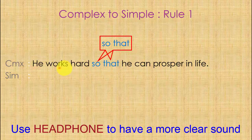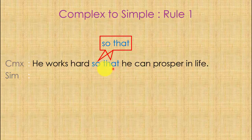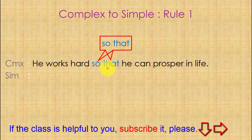A complex sentence contains at least two clauses — one is the main clause and another is the subordinate clause. The main clause may be at the beginning or at the end of the sentence. In this sentence the main clause is at the beginning, followed by the subordinate clause. The sentence is linked with the conjunction 'so that.'